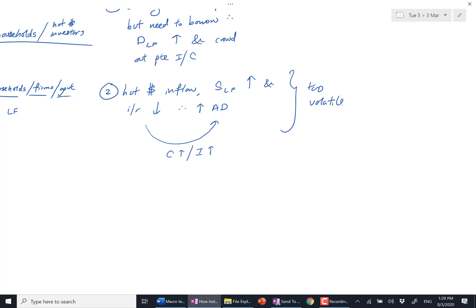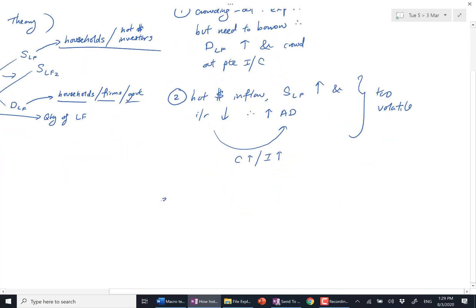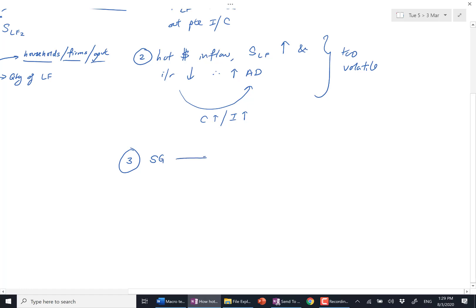Hot money is very volatile. You say interest rates fall, theoretically AD goes up, but by the time you walk to the bank to borrow, maybe the hot money has flowed out again. They're always moving around in search of higher returns. So this point theoretically is there, but I tend not to use it a lot. If I really have no choice but to force out one point why hot money flows can be good, this is it. Hot money outflow, on the other hand, is supply falling.